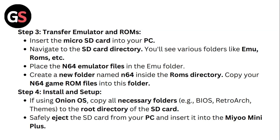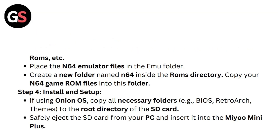Step 4: Install and set up. If using Onion OS, copy all necessary folders to the root directory of the SD card. Then safely eject the SD card from your PC and insert it into the Miyoo Mini Plus.